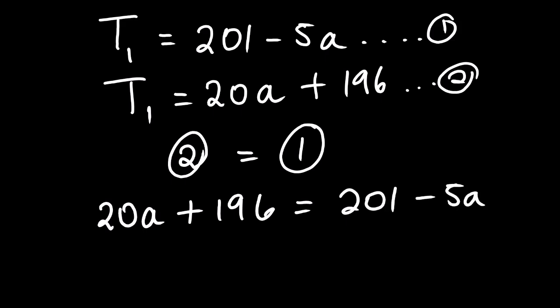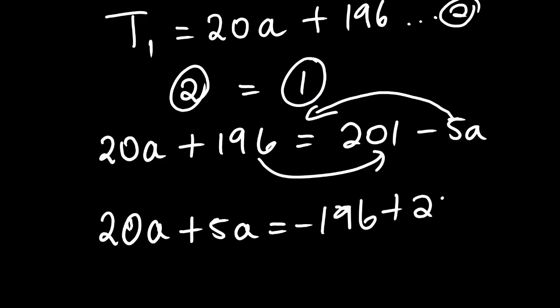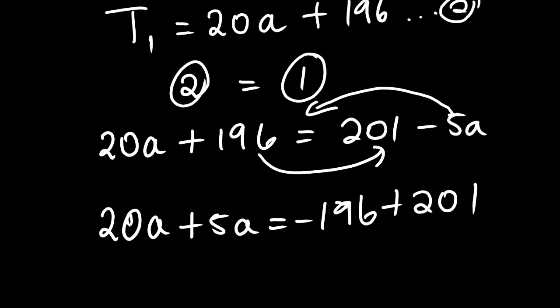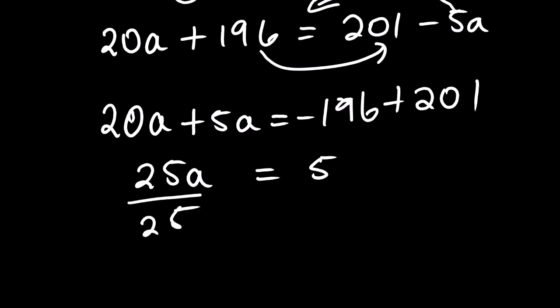Then we have 20A plus 196 equals 201 minus 5A. Then we solve for A. We take this to the other side and bring this one to this side. So we have 20A plus 5A equals negative 196 plus 201. So 20A plus 5A is 25A equals 201 minus 196 equals 5. Then we divide both sides by 25, and we have A equals 0.2 meters per second squared.